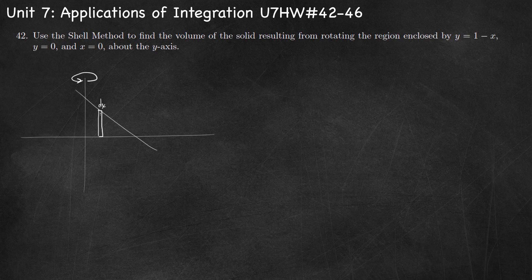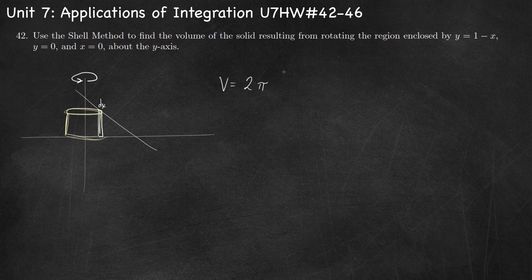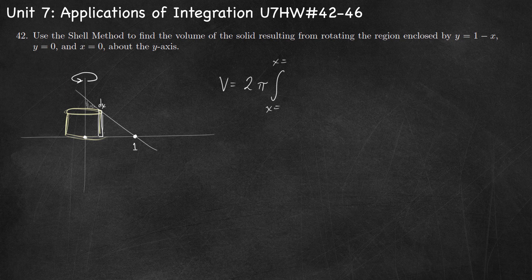When I rotate this rectangle around the y-axis I get a cylindrical shell. So for my setup, my volume is going to be 2 pi, and then I'm going to integrate. Since this is a dx problem, these are x values, so we need to figure out our points of intersection. This is where 1 minus x equals 0, so that occurs at x equals 1. We're integrating from 0 to 1 because this is my shaded region.